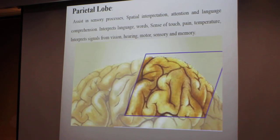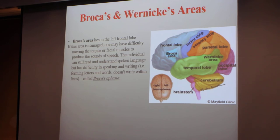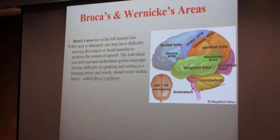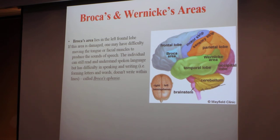Talking about the frontal and parietal lobes, there are two important areas we should know. These areas are named after the surgeons who discovered them. The first one is Broca's area. It lies in the left frontal lobe. If this area is damaged, one may have difficulty moving the tongue or facial muscles to produce speech. The individual can still read and understand spoken language, but has difficulty in speaking and writing.